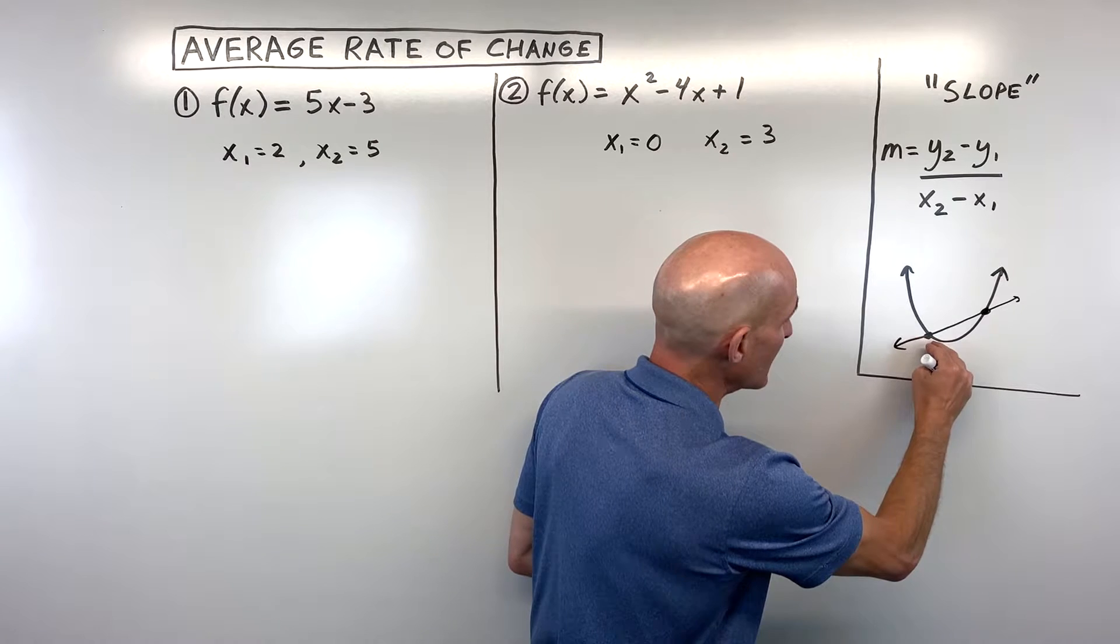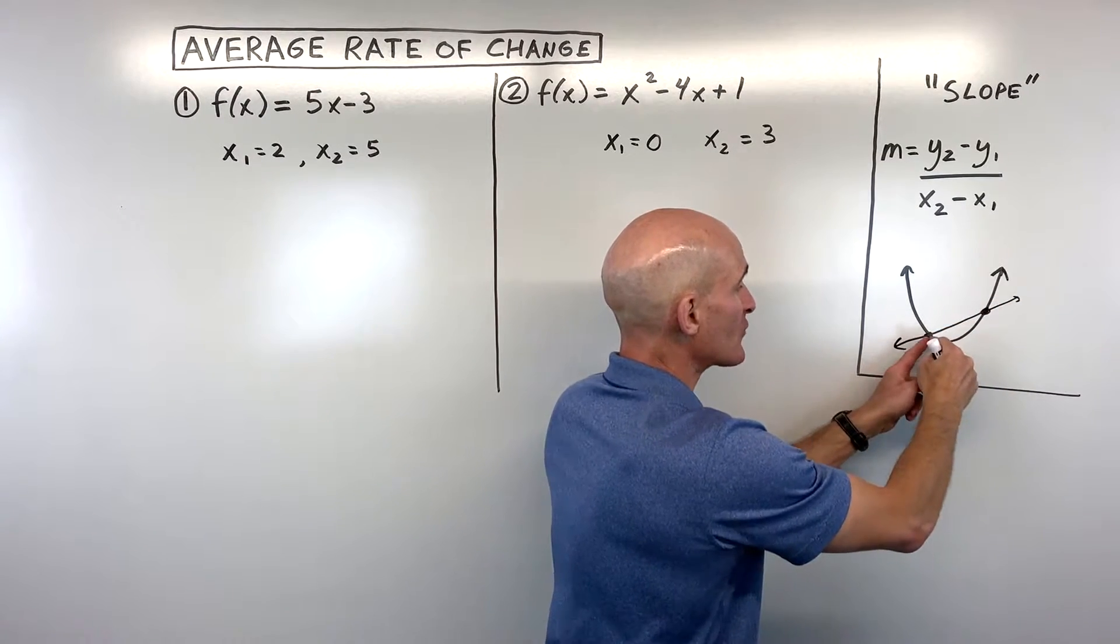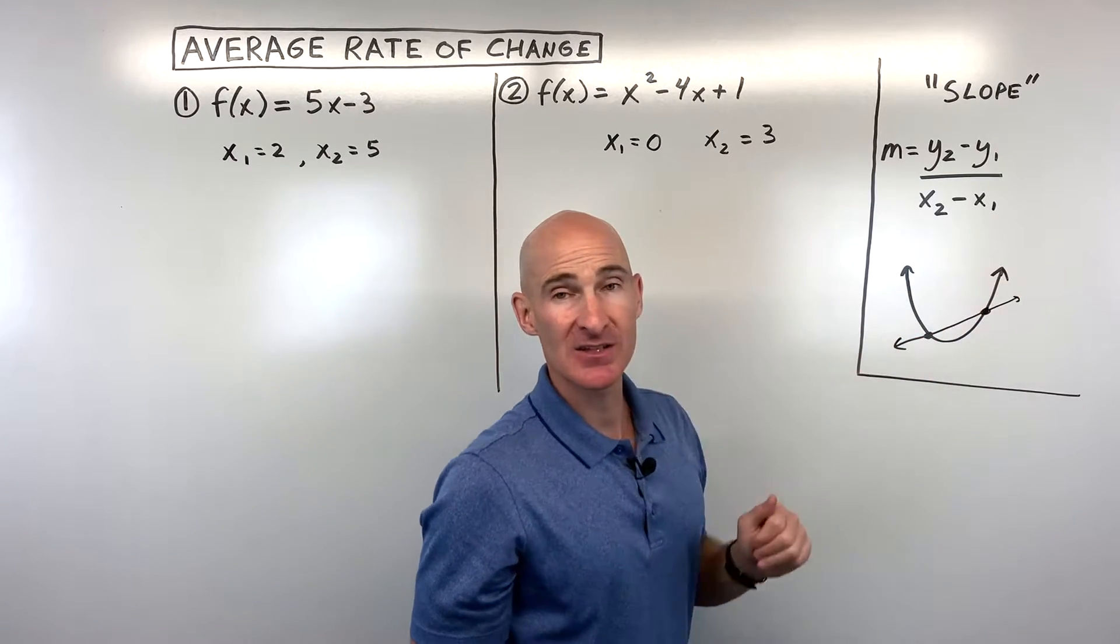Of course, in between here you can see this has a negative slope, zero, positive, more positive. But on average, from here to here, that's the slope of the line.